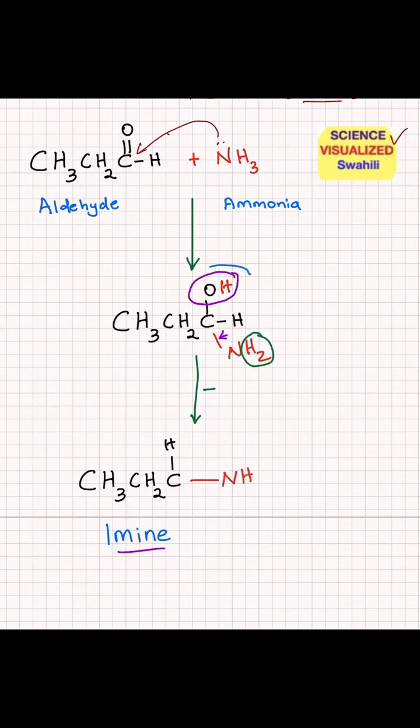And now because you lost water, the OH and that hydrogen, you end up with a double bond at that position. And this functional group that has carbon double-bond nitrogen is called an imine, and that's the final product.